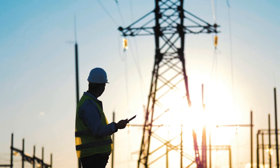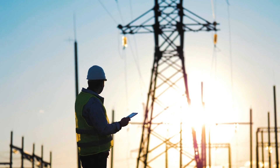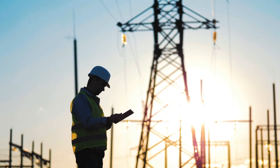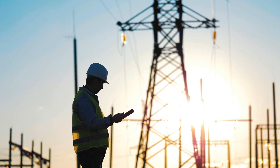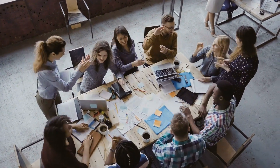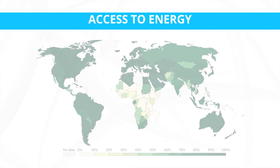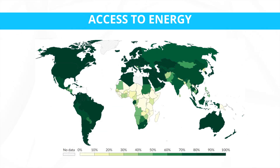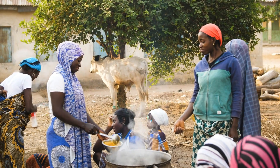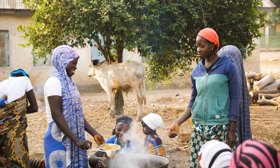Access to electricity enables better healthcare services, such as lighting in hospitals and vaccine refrigeration, and facilitates education with improved access to technology and learning resources. Energy access empowers individuals and communities to engage in income-generating activities, fostering economic self-sufficiency. Access to clean cooking solutions reduces indoor air pollution and associated health risks. Energy access can also bridge the gap between rural and urban areas, reducing disparities and promoting inclusive development.